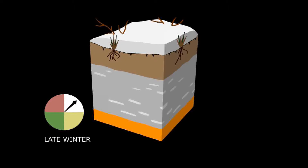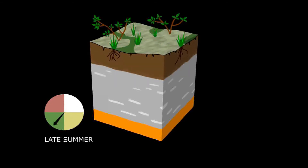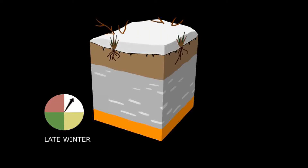The soil surface heaves up and down as it freezes and thaws. Then the spring thaw, the high summer with a totally thawed active layer, autumn and winter again when freezing of the active layer takes place, and so on.